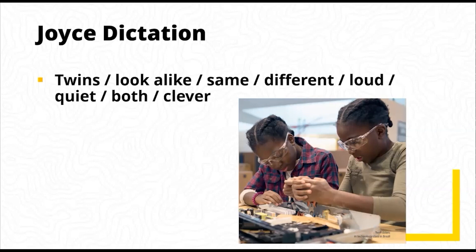We can ask further questions: do they have the same birthday? Are they the same age? If the answer is yes, then they are twins — same age, sisters, same birthday. We can look at a phrase like 'look alike' and say it means to look the same. We can ask: do you think they're both loud? Do you think they're both quiet? Do you think they're both clever? Here we're actually getting students to make predictions about the reading using the words.